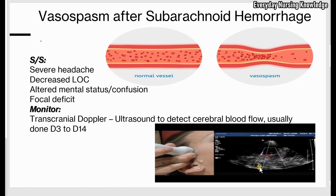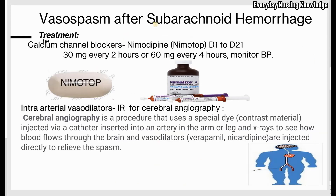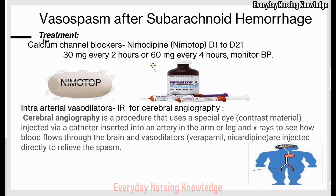What are the treatments for vasospasm? Patients after subarachnoid hemorrhage are ordered calcium channel blockers — vasodilators. Nimodipine is given from day 1 to day 21, with a dose of 30 mg every 2 hours or 60 mg every 4 hours. It comes as a capsule and can be taken by mouth or in liquid form through an NG tube. When calcium channel blockers are ordered, monitor for systolic blood pressure.